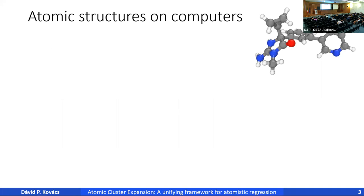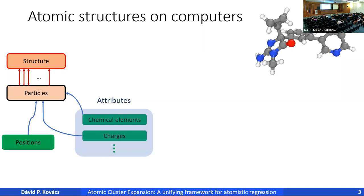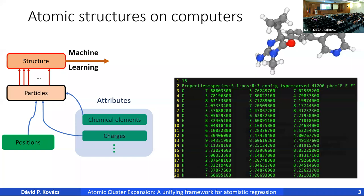This will be brief since most of the audience has seen this, but we want to represent atomic structures on computers. These structures are made up of particles that have two types of properties: position, embedded in three-dimensional space, and attributes such as chemical element, charge, or any other fixed property defining the system. We then want to do machine learning on this structure, which requires representing atoms on the computer — a raw xyz representation is not optimal.